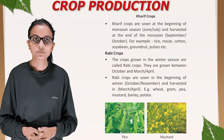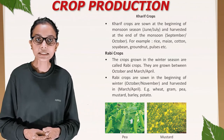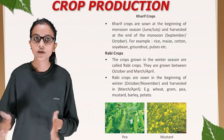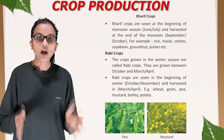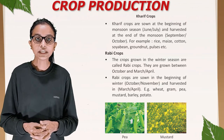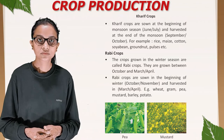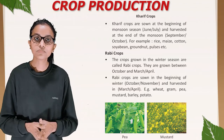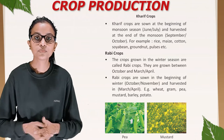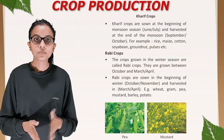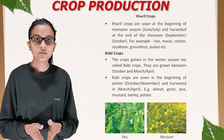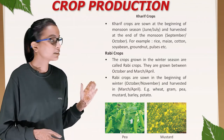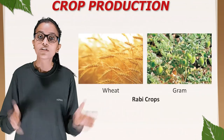Rabi crops are grown in the winter season between October and March to April. They are sown at the beginning of winter in October–November and harvested in March–April. Examples of rabi crops include wheat, gram, pea, mustard, barley, and potato.